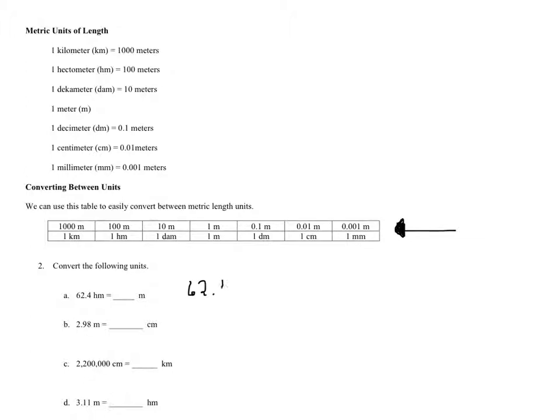62.4 hectometers, so I'm right here. And it wants me to go to meters, so I'm going to move two places to the right. So I'm going to move the decimal two places to the right. One, two. So it's 6,240 meters. Cool, done.